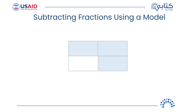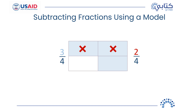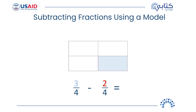Using models can help us subtract fractions. Now it is your turn to solve the following example. First, count the total number of equal parts so that you know what the denominator is — it is four equal parts. What is the fraction of the shaded parts? Three-fourths. How about taking two-fourths — the shaded parts with red X's? Two-fourths. Now let us subtract: three-fourths minus two-fourths equals one-fourth. You did it!